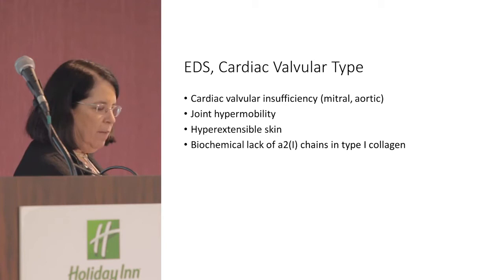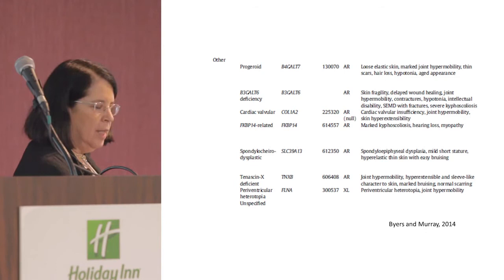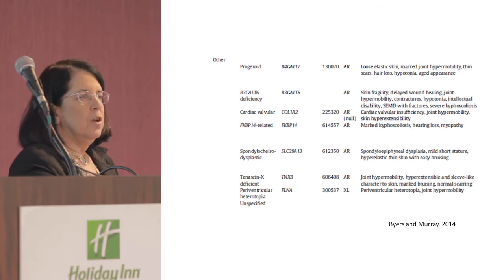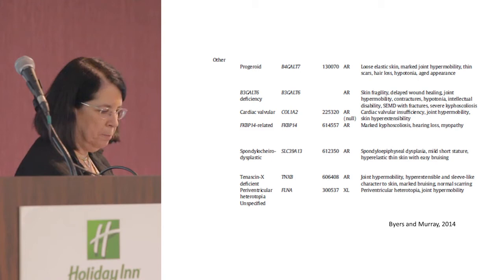The cardiac valvular type presents with joint hypermobility, hyperextensible skin, and valvular insufficiency, caused by a lack of the alpha-2 chain of type 1 collagen. There are many other types now reported, and a full description will be coming from the international symposium held last May, to be published in an upcoming issue of the American Journal of Medical Genetics in March.